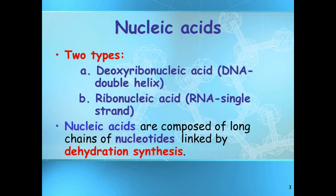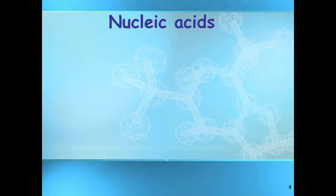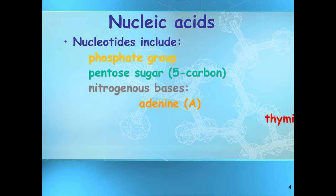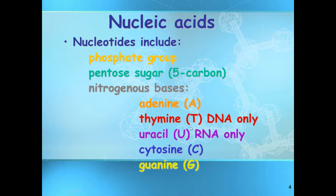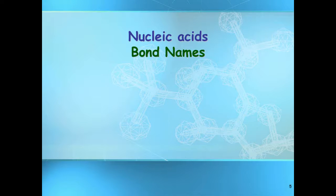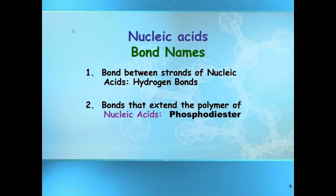Quick review: we know there are two types of nucleic acids, DNA and RNA. We know there's the phosphate, the sugar, and there are actually five bases. Adenine and thymine have a unique interaction — adenine goes with thymine. What I want to do is focus on showing the nucleic acids' hydrogen bonds and phosphodiester bonds at various stages of replication, transcription, or translation.